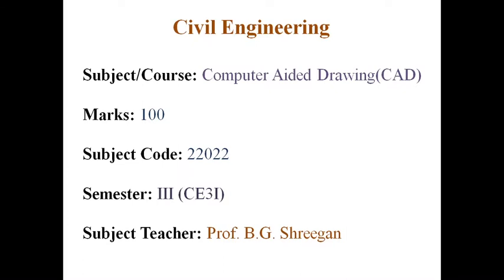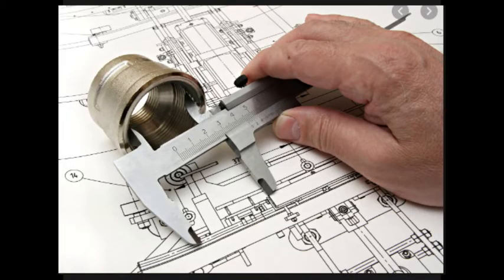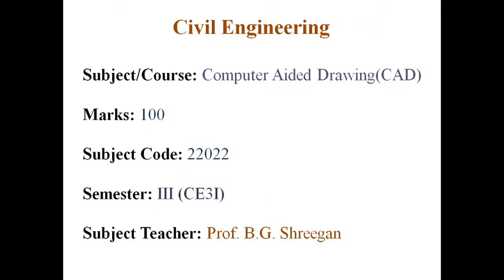Therefore, the subject is included at the third semester in your syllabus so that civil engineering diploma holders will get an essential skill of using CAD as a drawing tool to draw, read, and interpret civil engineering drawings. This will also provide more speed, accuracy, and repetitive use of drawings as and when needed. Through this technique, you will be able to edit existing drawings and create new two-dimensional, three-dimensional, and isometric drawings as per requirement.